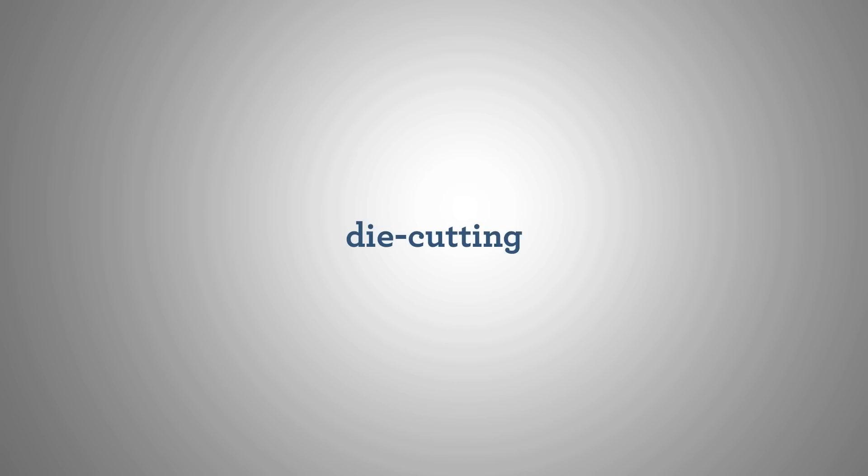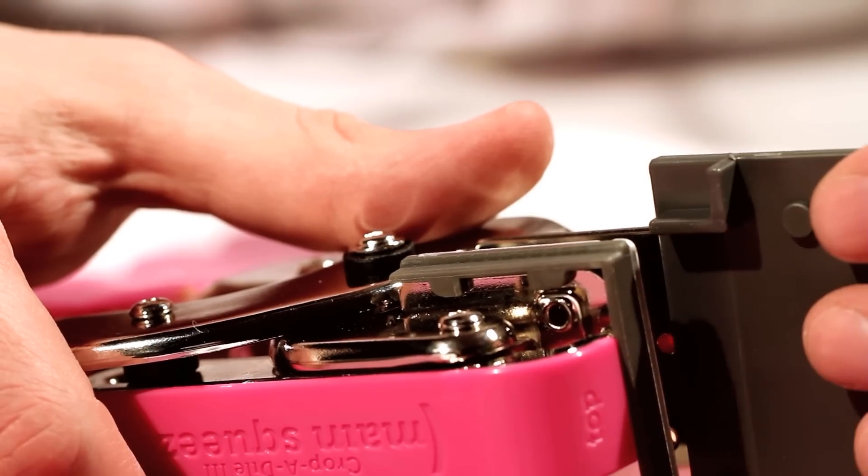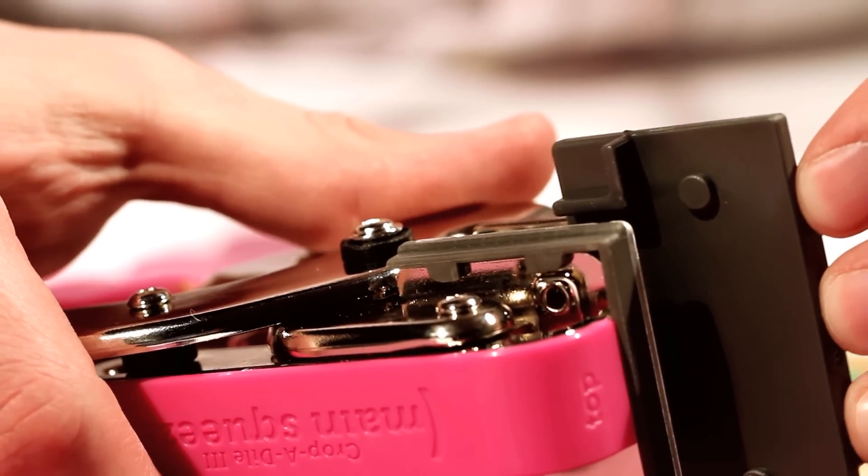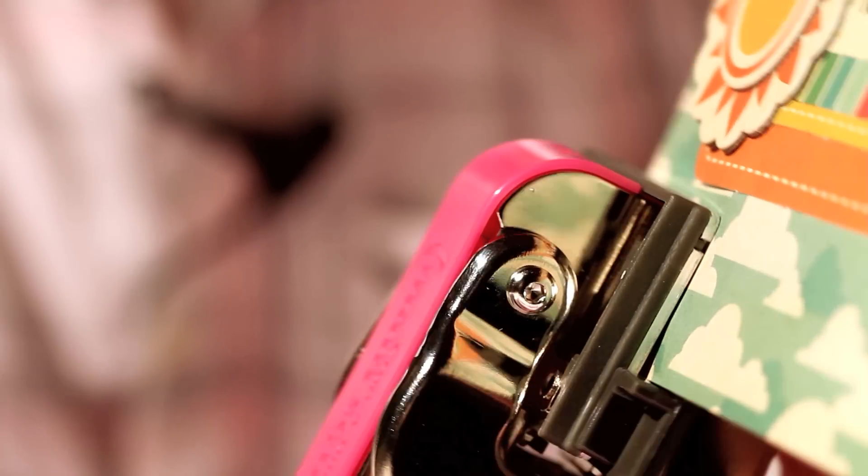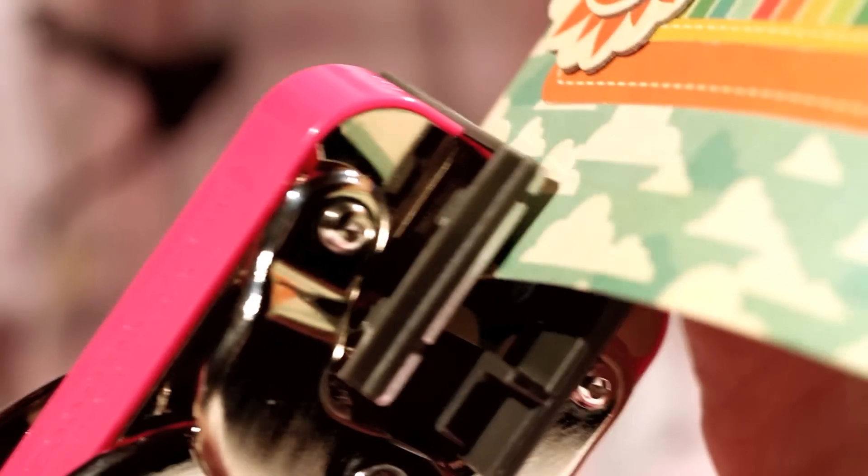Another great function of the main squeeze is die cutting. There are 10 different styles to choose from, so pick out the plates you want and slide them into the tool. When you place your paper between the plates and squeeze, you'll hear a popping sound to let you know that your punch went through.